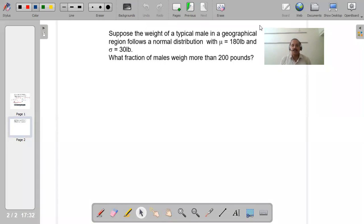So this is our next example in which weights are assumed to be normally distributed with mean 180 and sigma 30. What fraction of the males weigh more than 200 pounds?